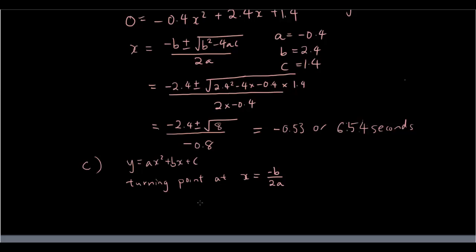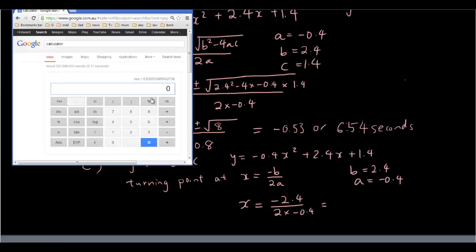So we have y equals negative 0.4x squared plus 2.4x plus 1.4. So b is 2.4 and a is negative 0.4. So turning point occurs at x equals negative 2.4 over 2 times negative 0.4. So putting that in the calculator, negative 2.4 over bracket 2 times negative 0.4, the answer is 3. So x is equal to 3.